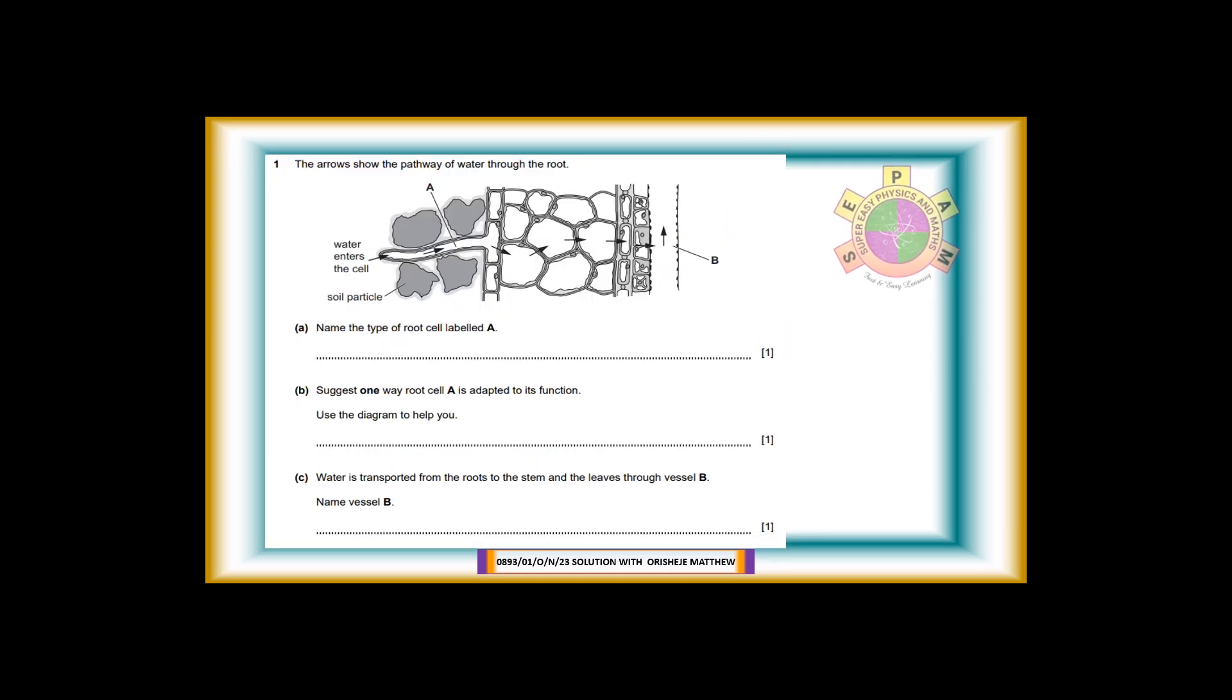Question 1. The arrows show the pathway of water through the root. For one mark, question 1a: Name the type of root cell labeled A in the diagram. Answer: Root hair cell. Question 1b: Suggest one way root cell A is adapted to its function. Use the diagram to help you. For one mark. Answer: Root hair has large surface area, root hair is long and thin, root hair has thin membrane and short diffusion pathway.